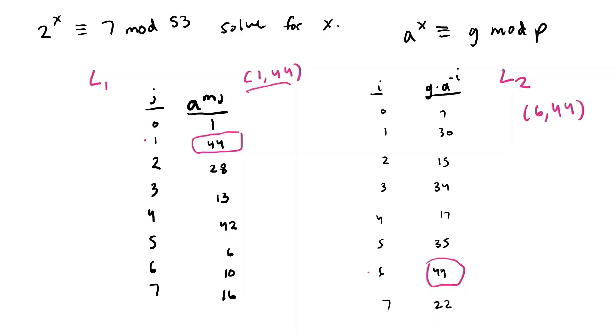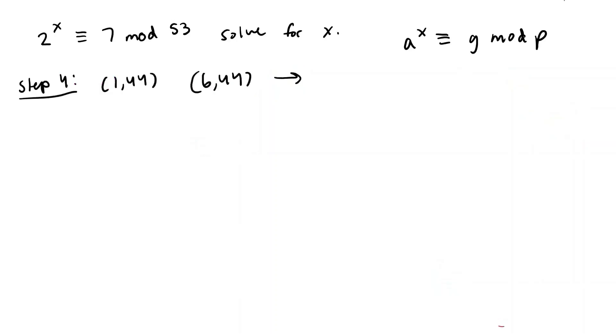So these two points will be important for the next step which I'll go ahead and do right now. So the step we just did was essentially our step 4 where we found a collision in L1 and L2 which is 1, 44 and 6, 44. So step 5 is now we're going to take these two points and we're going to plug them into this equation MJ plus I mod P.